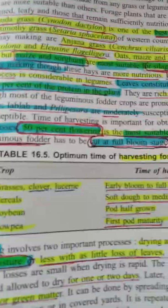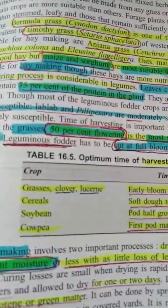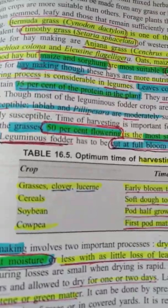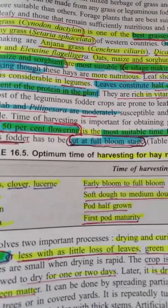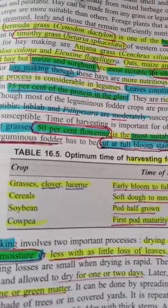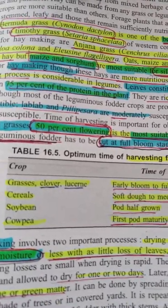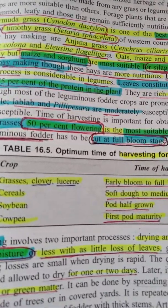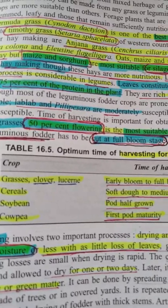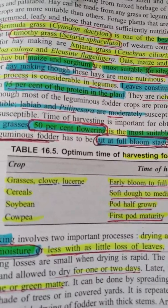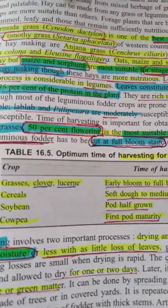If it is asked in general what is the optimum time for hay making, the answer is 50% flowering. Harvest at 50% flowering is the most optimum time for hay making. Please remember it.